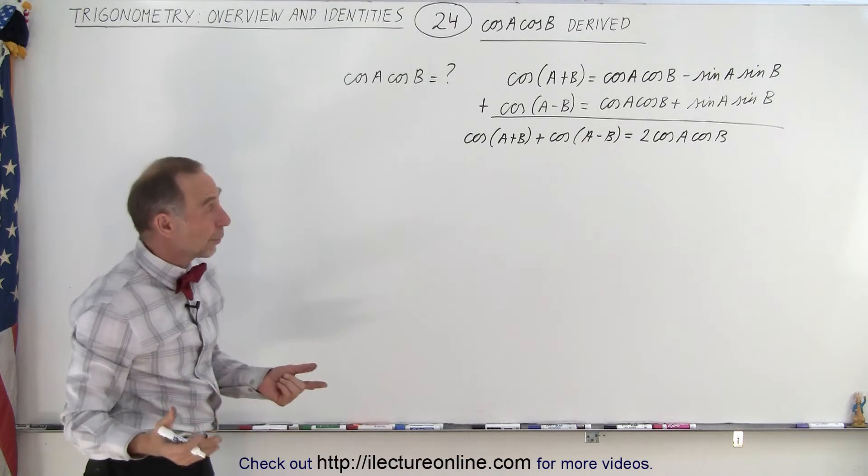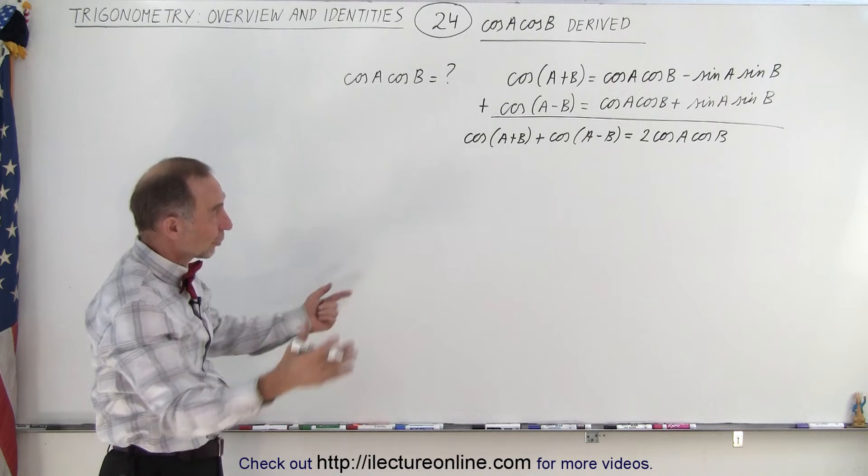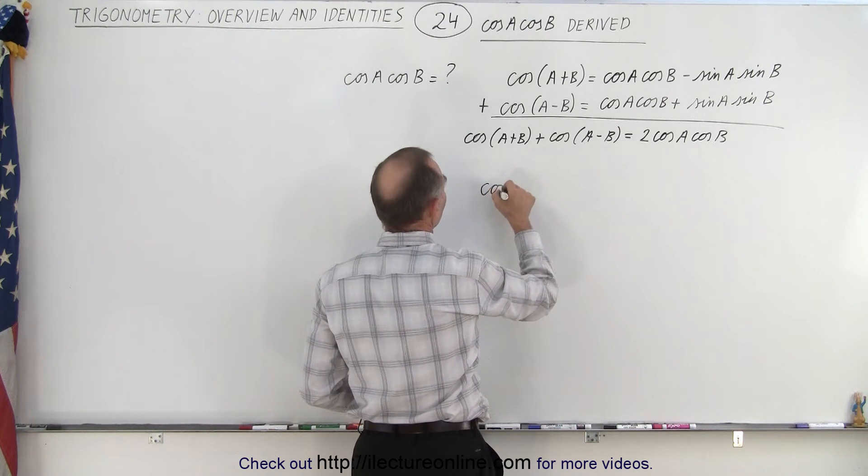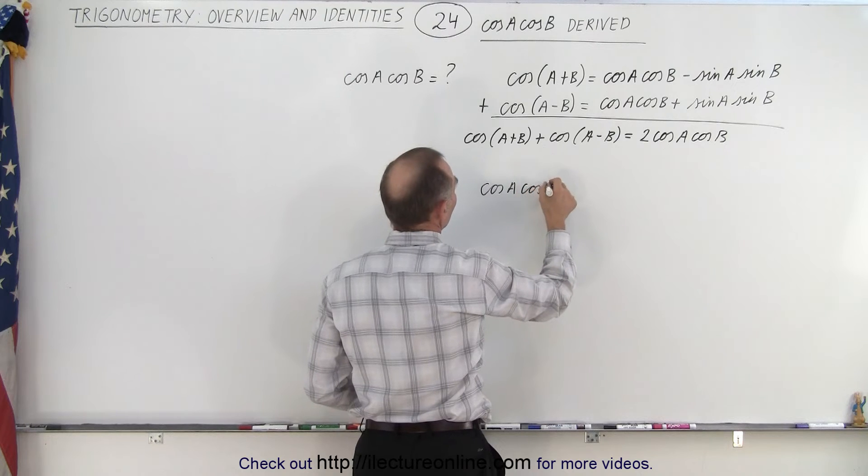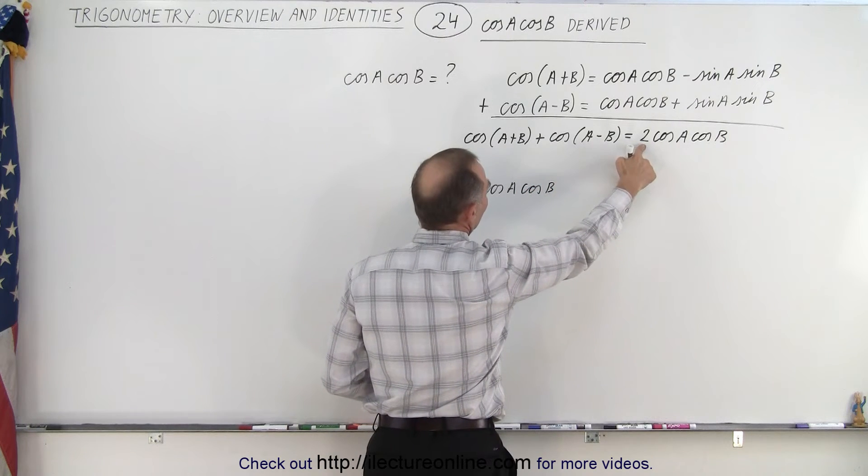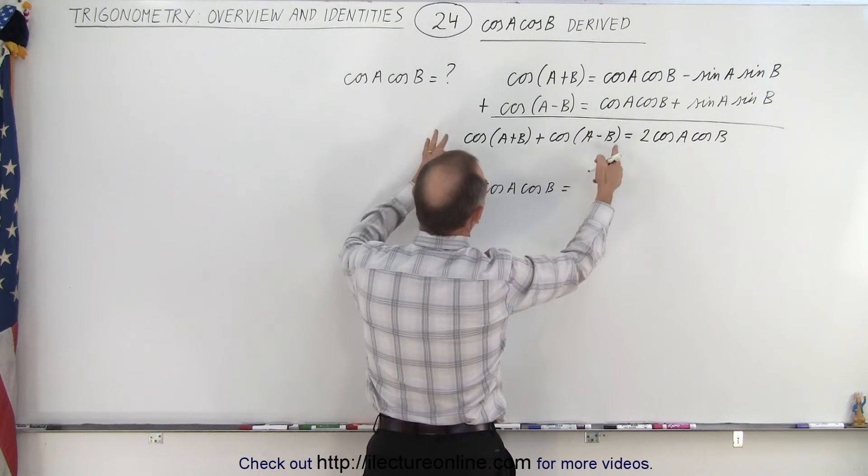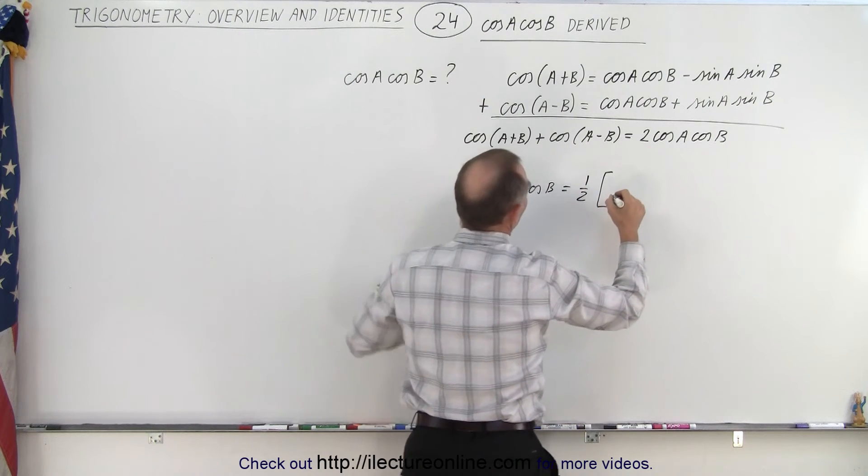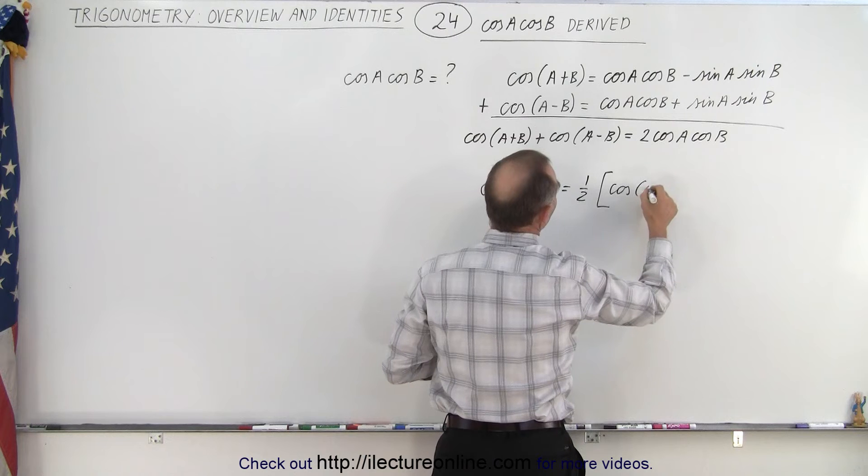All we have to do is divide both sides by two and turn the equation around, which means we now have cosine of A times cosine of B equals half of this. So we get one half times the cosine of A plus B